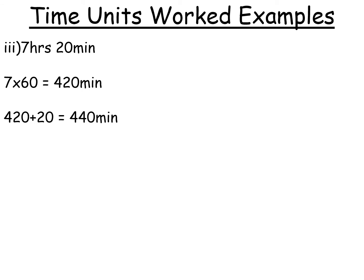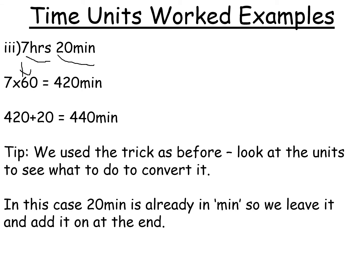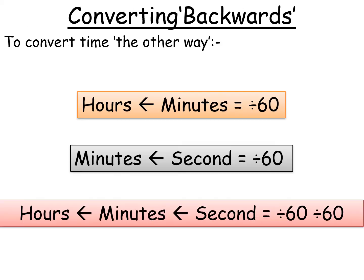And then the final example, pretty straightforward again, because you probably noticed you've got 20 minutes there. So you leave that as it is. But the seven hours we can convert into minutes by doing times 60 again. And then, obviously, at the end, to get 20 minutes, we add that on so it becomes 440 minutes. So notice how we use the trick as before. Look at units to see what we do to convert it. In this case, 20 minutes is already in minutes, so we leave it and add it on at the end.